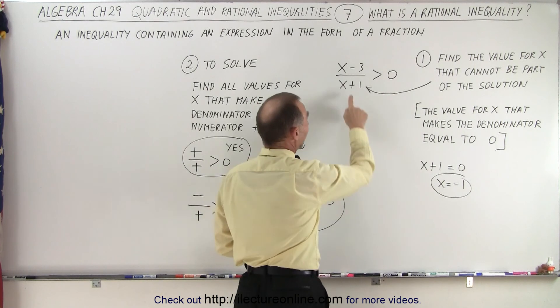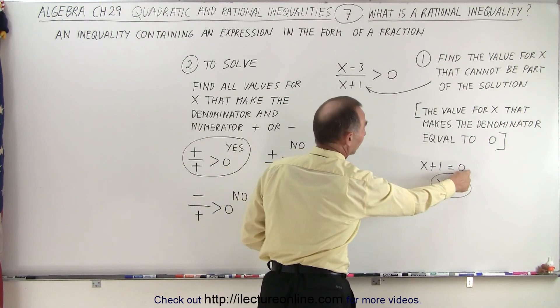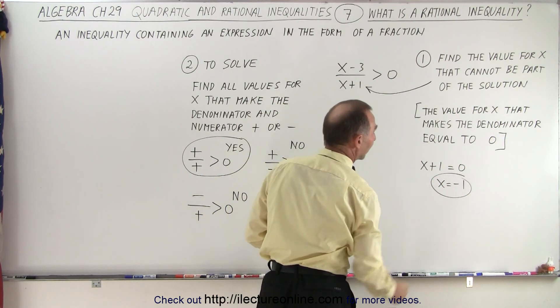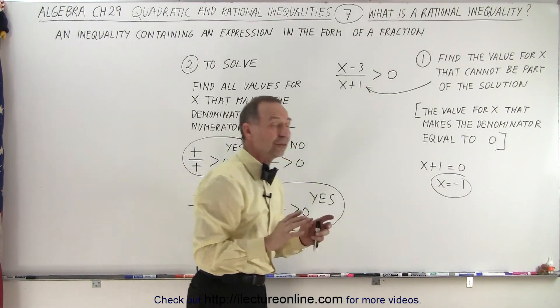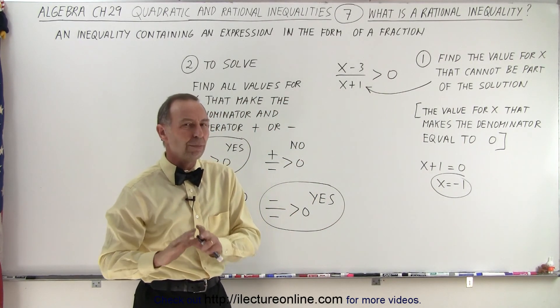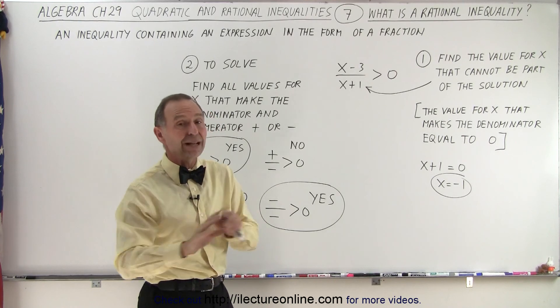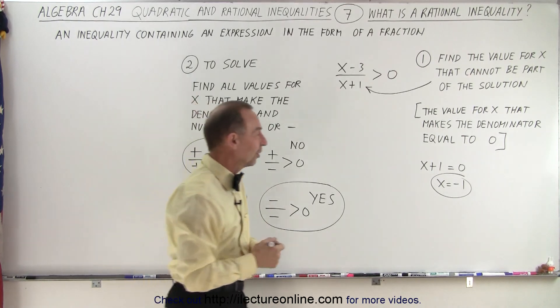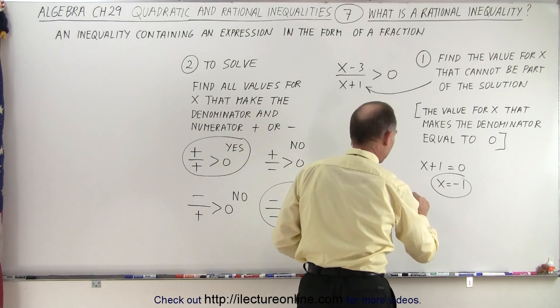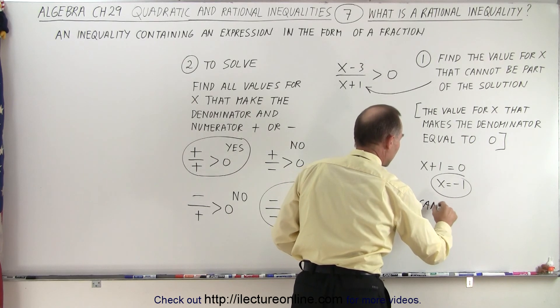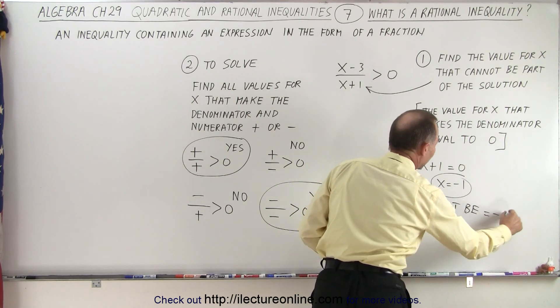So in this case, we take x plus 1, set it equal to 0, and we find out that when x equals negative 1, the denominator is equal to 0. So therefore, that's a forbidden part of the solution. x cannot equal negative 1.